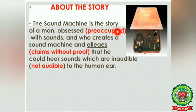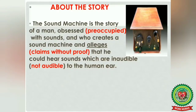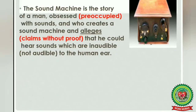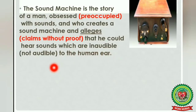'The Sound Machine' is the story of a man obsessed with sounds who creates a sound machine and alleges that he could hear sounds which are inaudible to the human ear. Key word meanings: 'obsessed' means preoccupied; 'alleges' means claims without proof; 'inaudible' means not audible. This man was very much obsessed with sounds and claimed he could hear sounds not audible to the human ear.